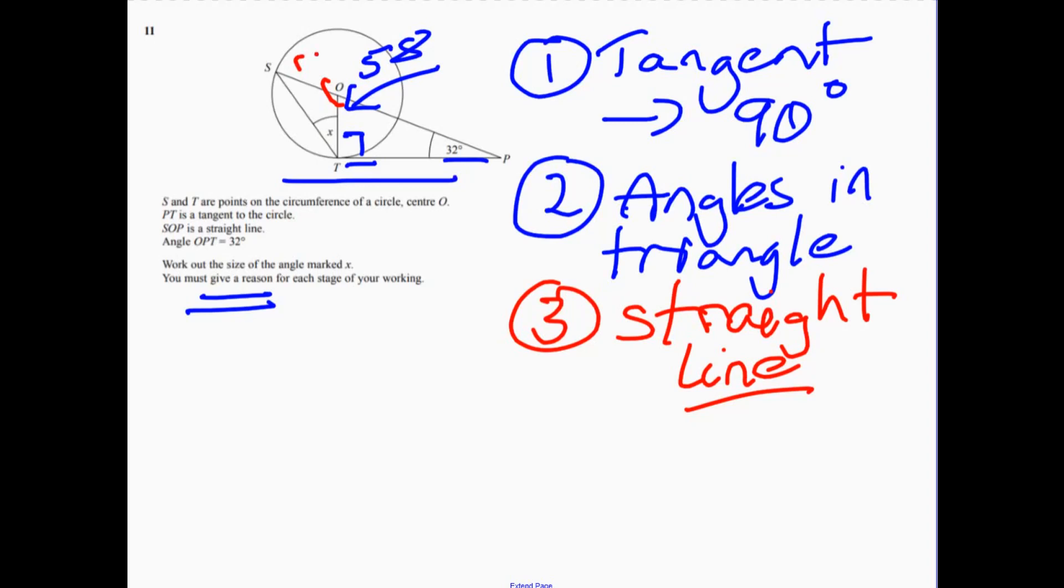And then number four, we know we've got an isosceles triangle. Now, you don't always recognize this one. But these two here are both the radius. So therefore, it's isosceles.